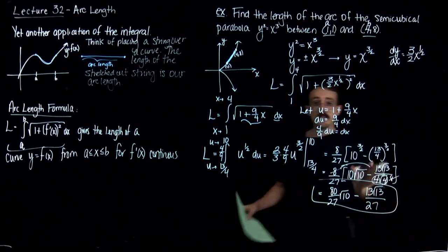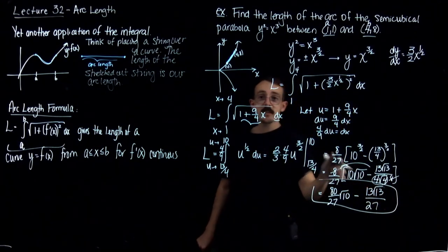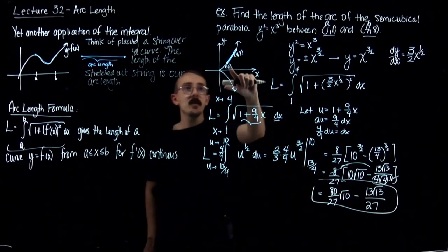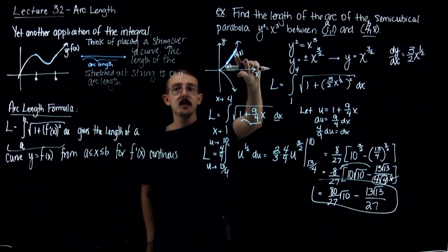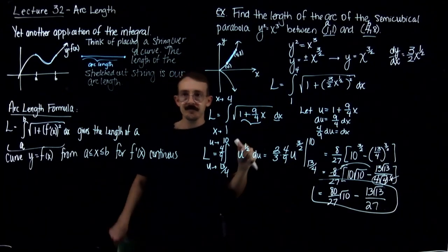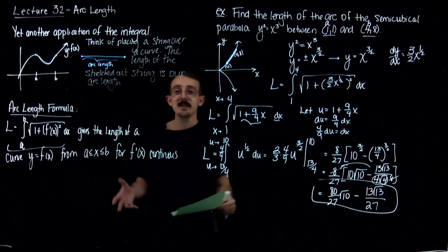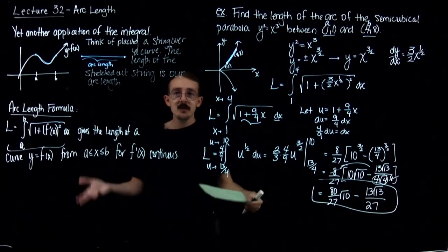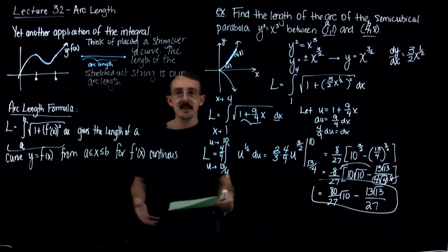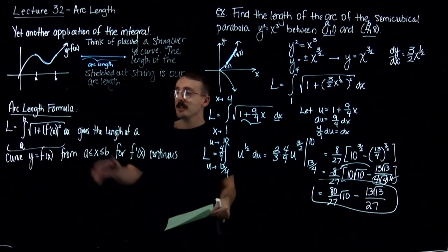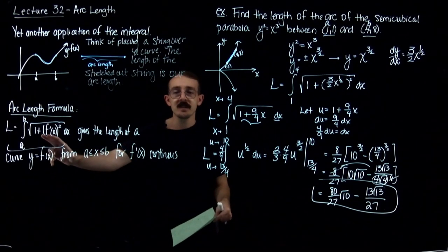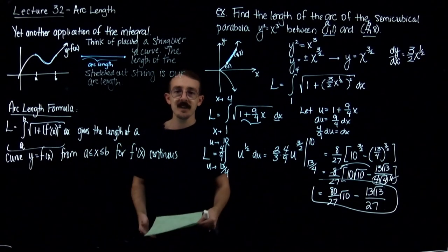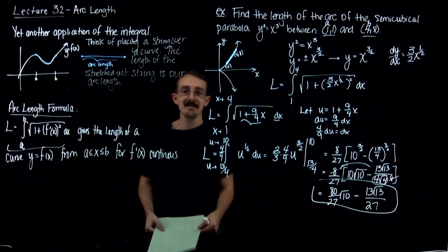This gives us the exact arc length from walking on the curve between those two points. In the next part of this video, we'll do two more examples of arc length and I'll show you a couple variations of this formula.